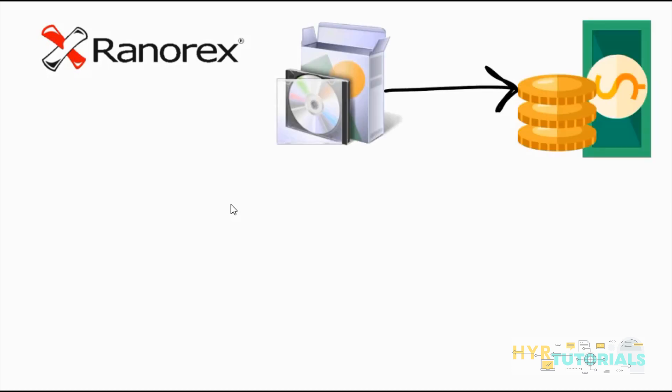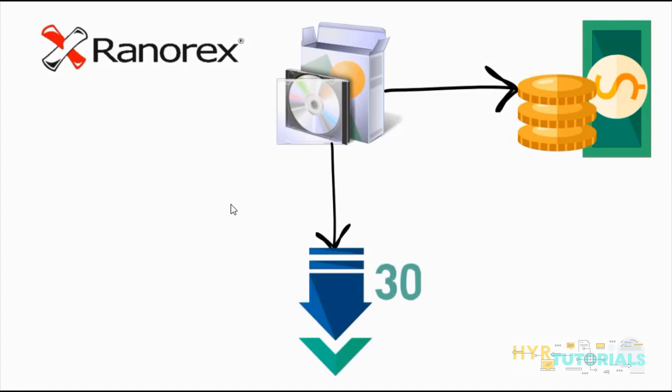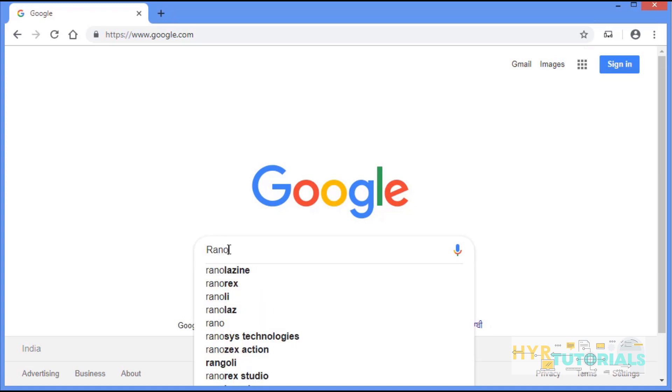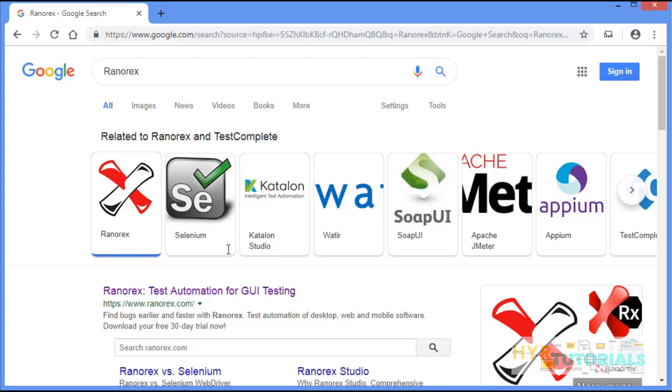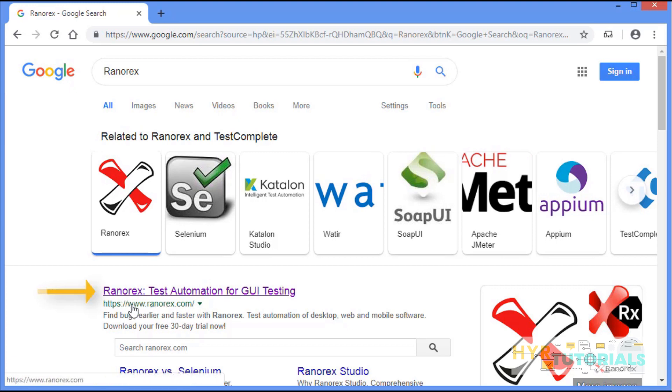The next one is Ranorex. Ranorex is a GUI test automation framework provided by Ranorex GmbH, a software development company. Ranorex can be used for functional testing and end-to-end testing. This software is also a licensed version, but it provides a free trial version for 30 days. Now I will show you how to download it — type Ranorex, and you can see the link ranorex.com.